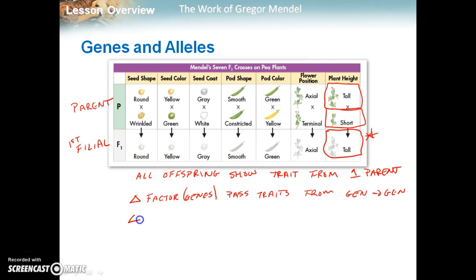The other conclusion that he made was that we had to have some kind of dominance happening. So he called it the principle of dominance, meaning one trait had to dominate the other. So tall here is dominating short, and so all of the offspring become tall. If we look at seed shape, all of these round seeds when crossed with wrinkled seeds, all of the offspring are becoming round. So round is dominant over wrinkled. So we have dominant traits and we have recessive traits.